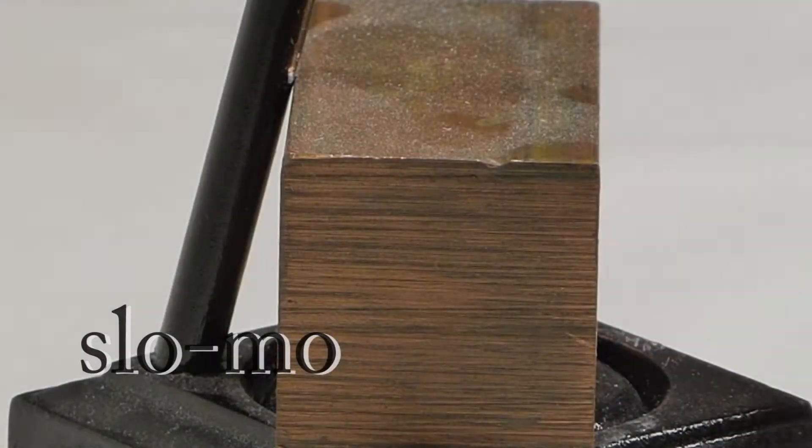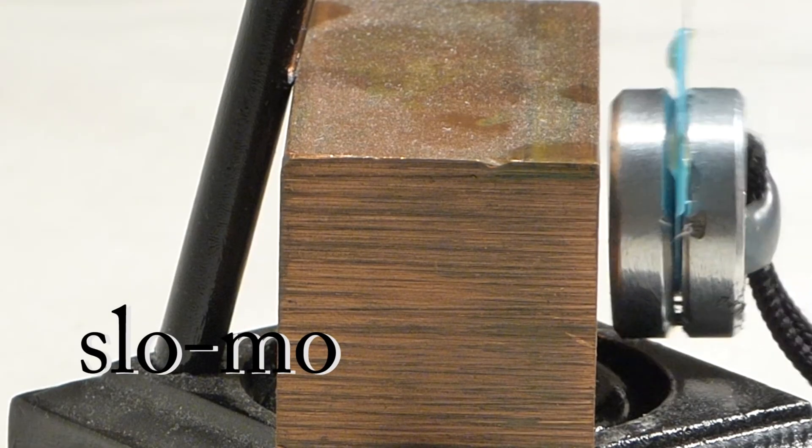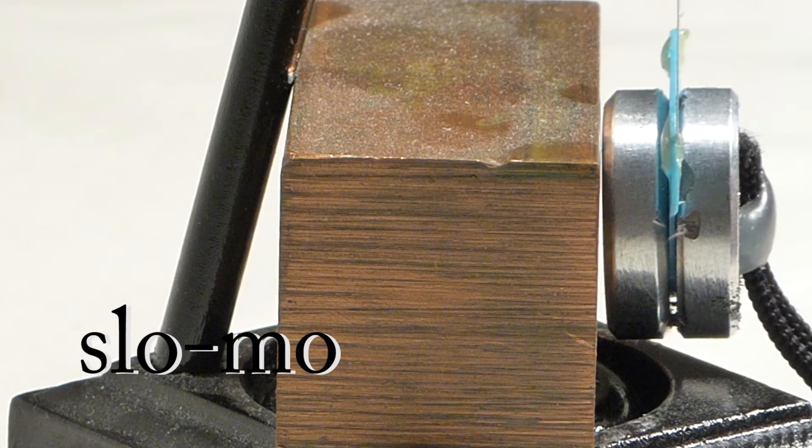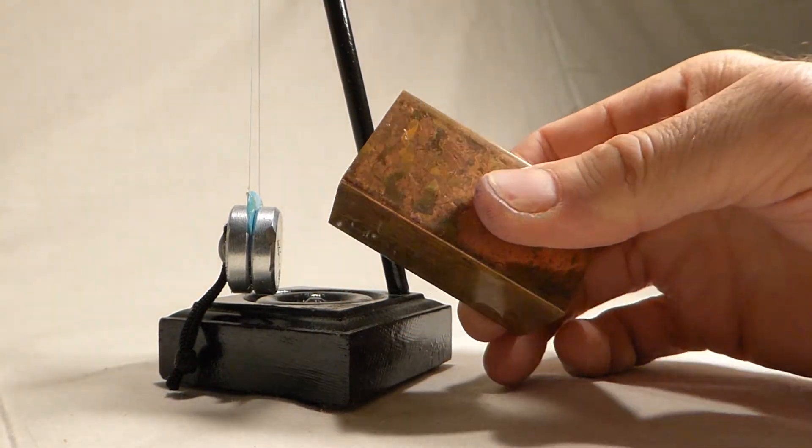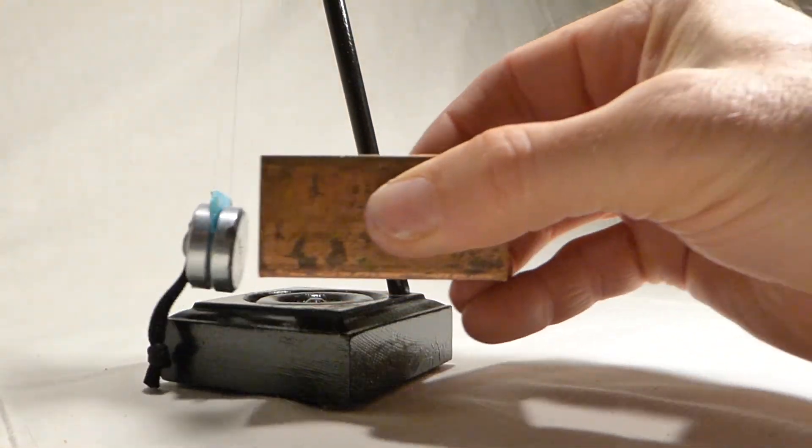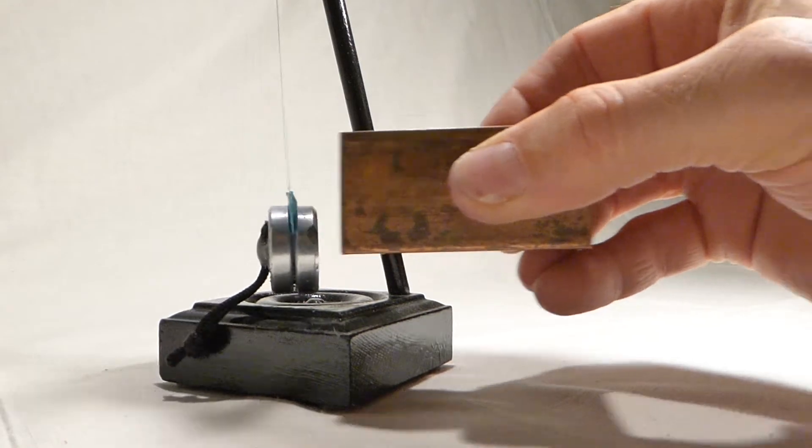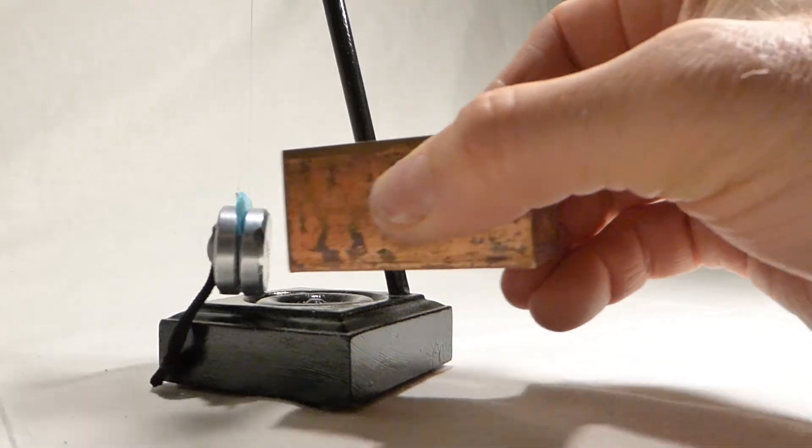Take a look in slow motion. You can see in just one frame it goes from full speed to zero. Now most of us know that copper is not magnetic. You can't pick up a penny with a magnet, but it's known as diamagnetic.